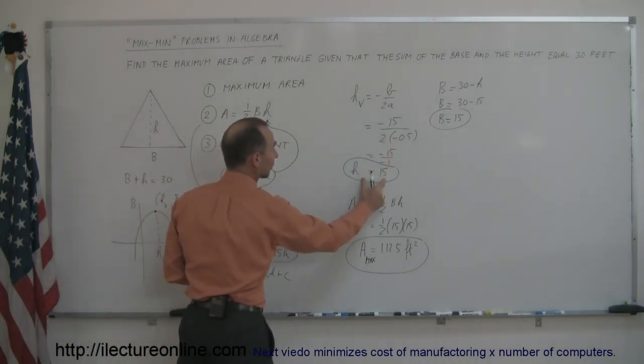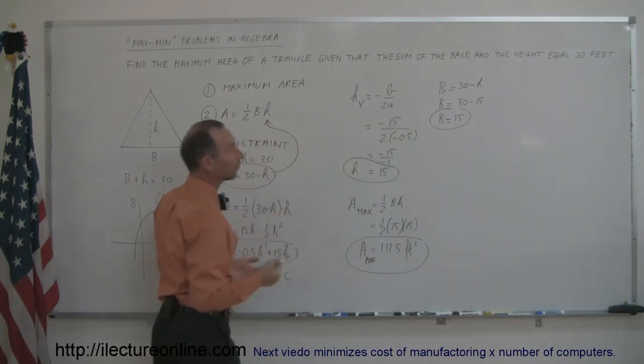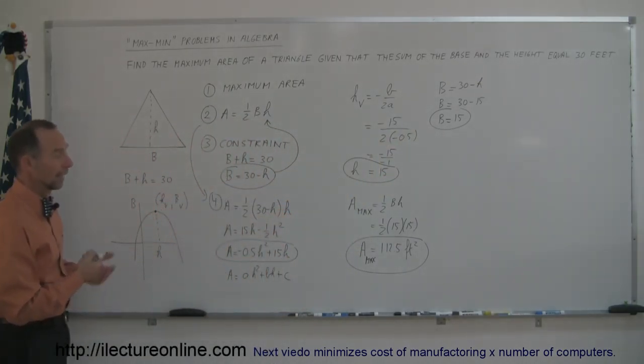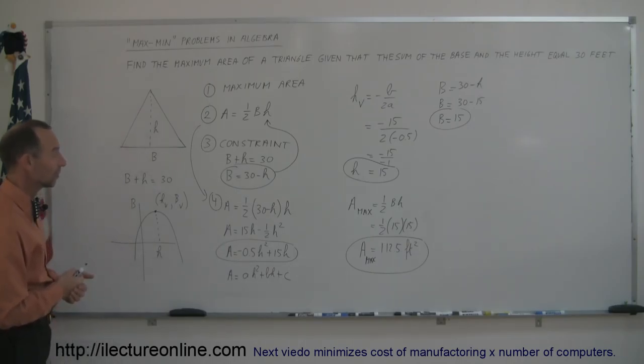You plug those in, you find the value for h, use a constraint to find the value for b, and then you're able to find the total area. And that's how you solve these types of problems. I can think of a few more examples, so let me see if I can get you a couple more examples of these, so you feel very comfortable doing them.